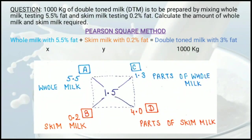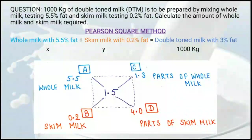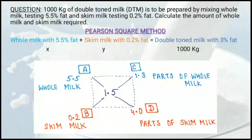For this question, you need prior knowledge of the fat content of different milk types. Double toned milk has 1.5% fat, so 1.5 is the required fat in the final product and will be written at the center of the square.